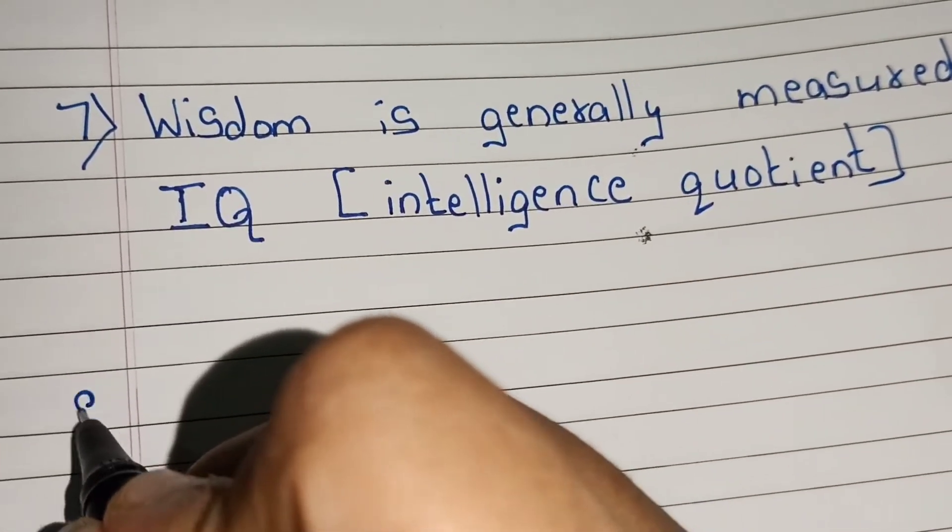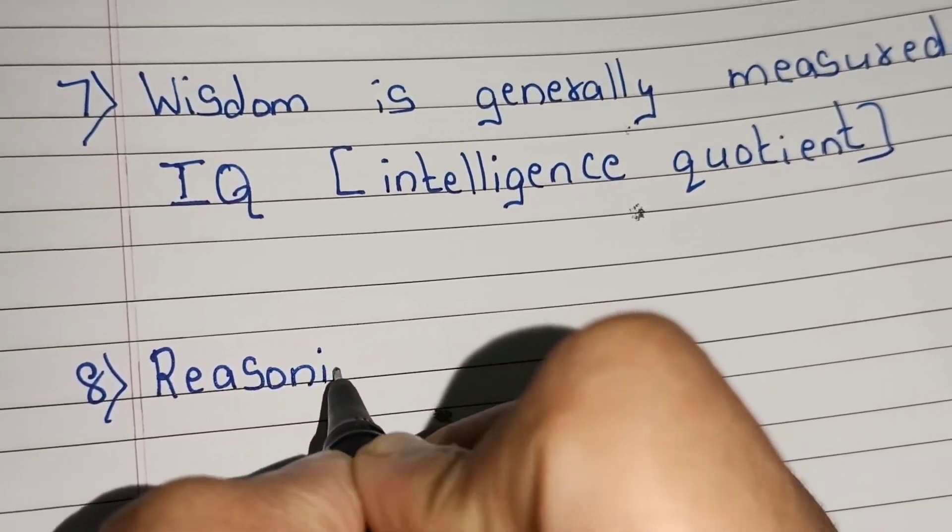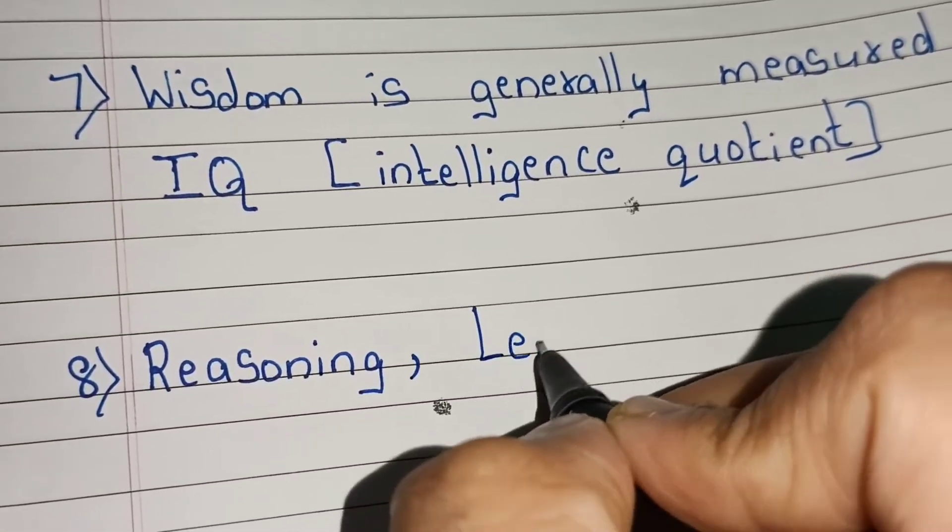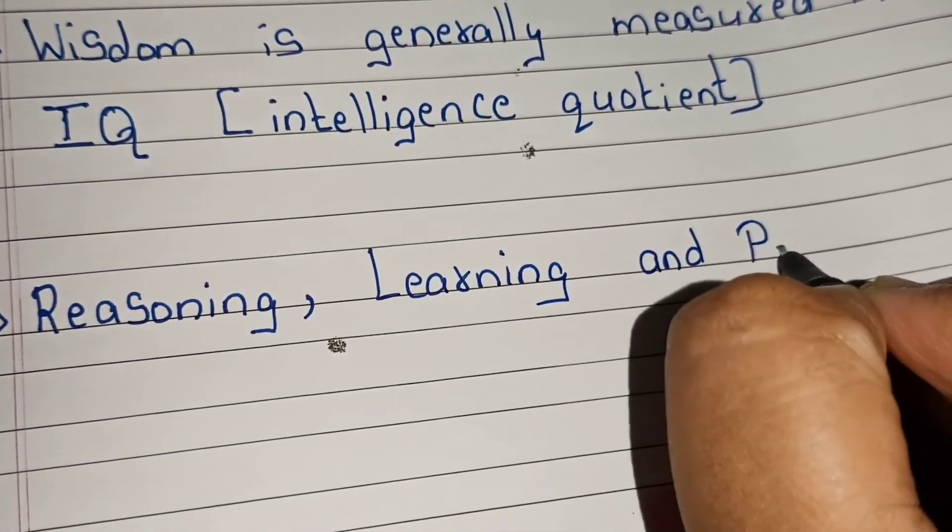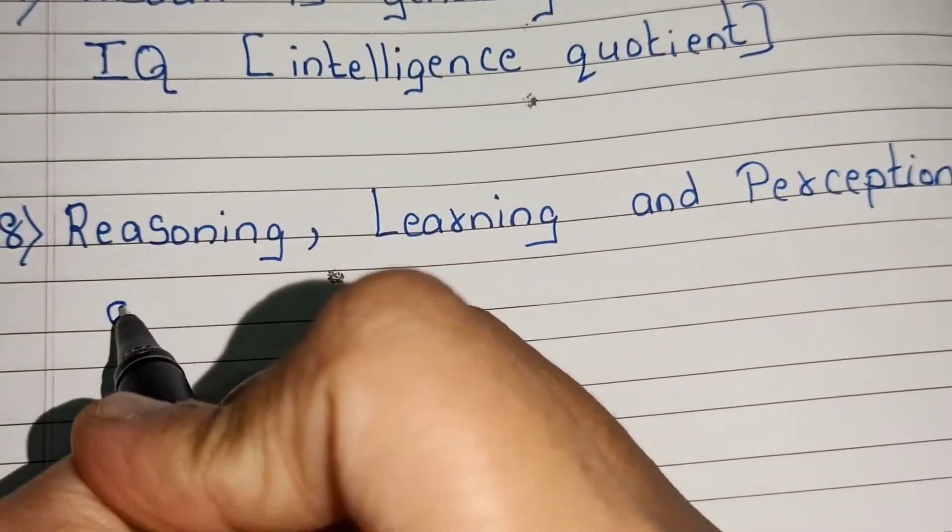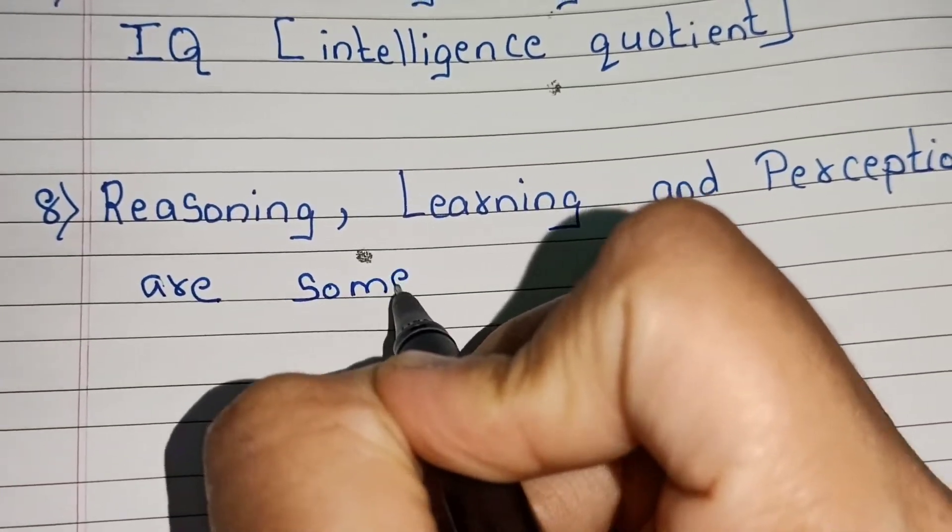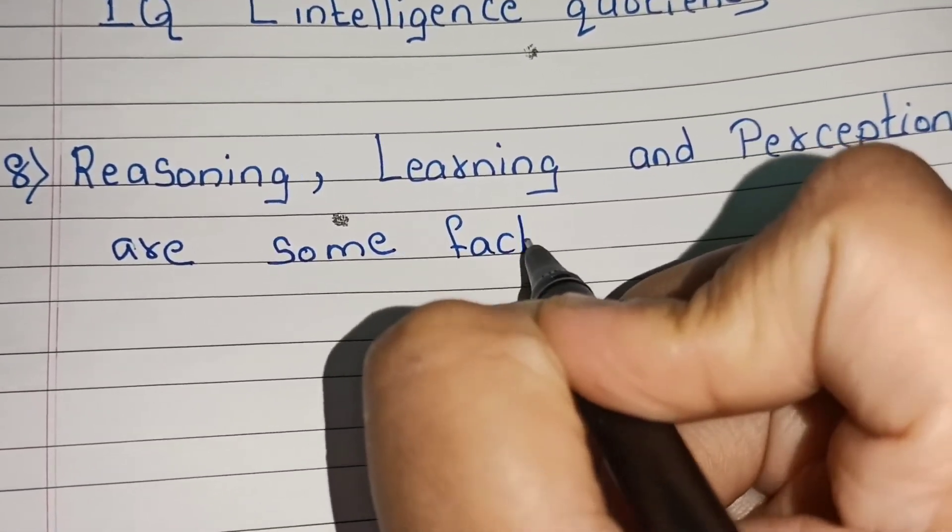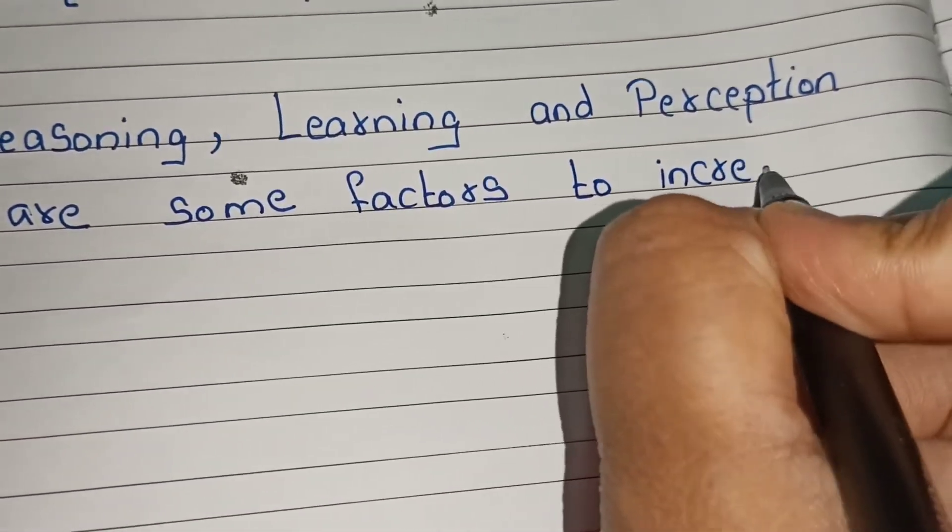Point number eight, reasoning, learning and perception are some factors necessary to increase wisdom.